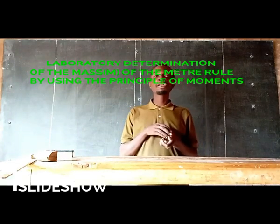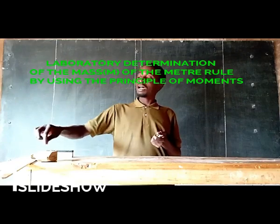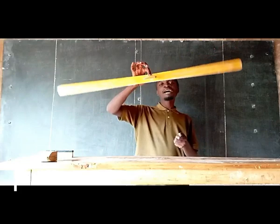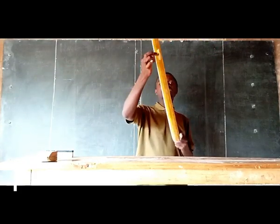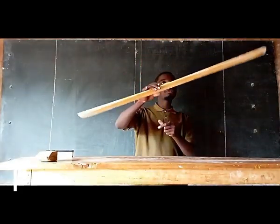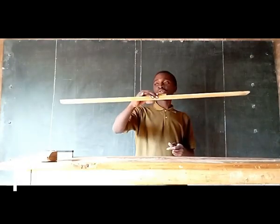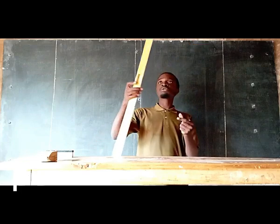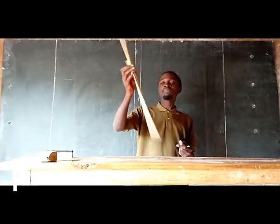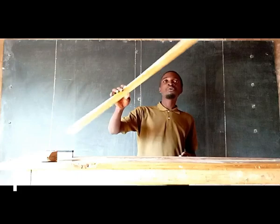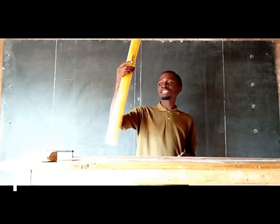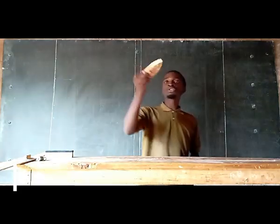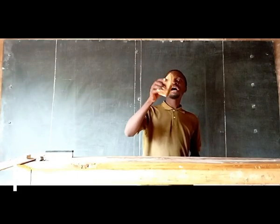You are provided with the following instruments. We have a meter ruler — as you can see, this is a meter ruler. It is a meter ruler because it is made up of a length of 100 centimeters, so the length of this rule is 100 centimeters. That is why we call it a meter ruler; it means a ruler with the length of one meter.